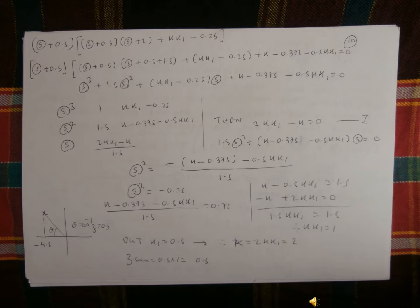So that equation we got it. We have to take the x³ term and also we take the coefficients. So the x³ coefficient is 1, the coefficient of x is kk1 minus 0.25. And similarly, the x² coefficient will be 1.5, and the constant term is minus 0.375 minus 0.5·kk1.